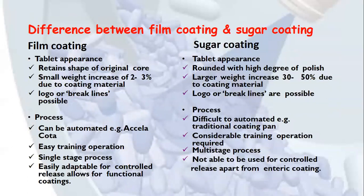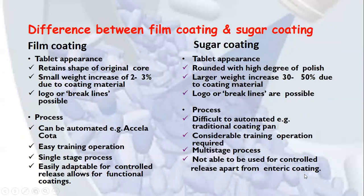Comparing film coating and sugar coating: in film coating the tablet retains the shape of the original core, while sugar coating produces a rounded, highly polished tablet. Film coating causes a small weight increase of 2-3%, whereas sugar coating causes a larger weight increase of 30-50% or sometimes 100%. Film coating can be automated using Accela Coater and is a single-stage process easily adaptable for controlled release, while sugar coating is difficult to automate, is a multi-stage process requiring considerable training, and is mainly limited to enteric coating for functional use.